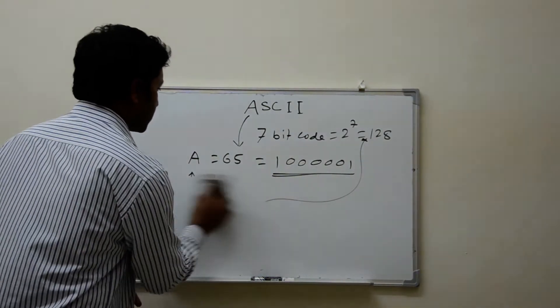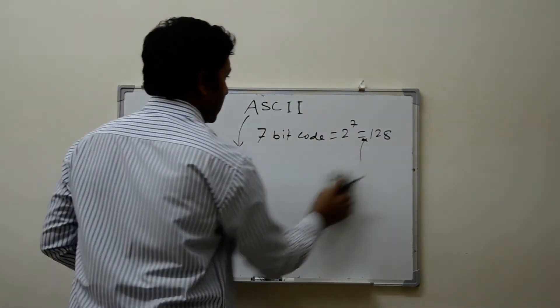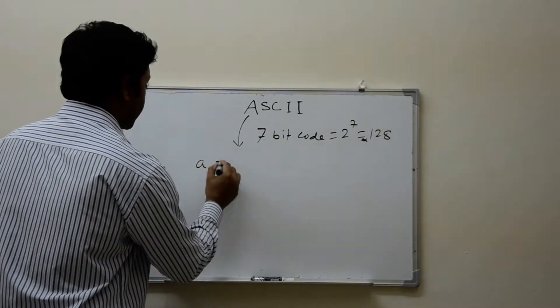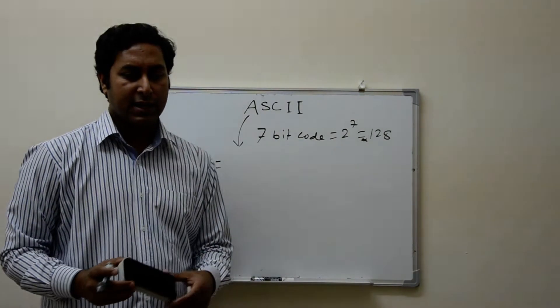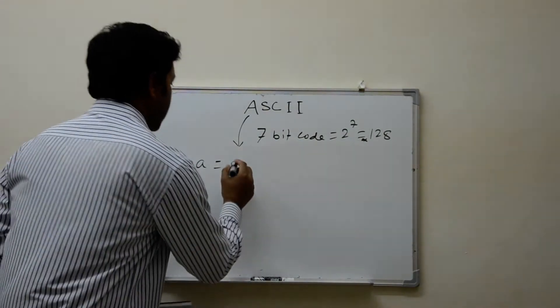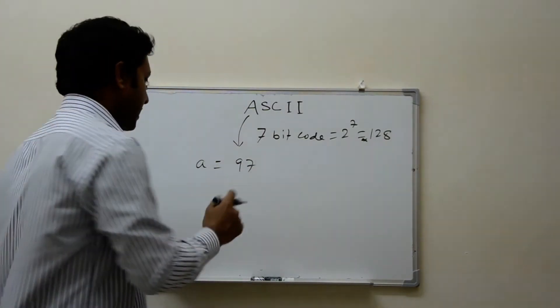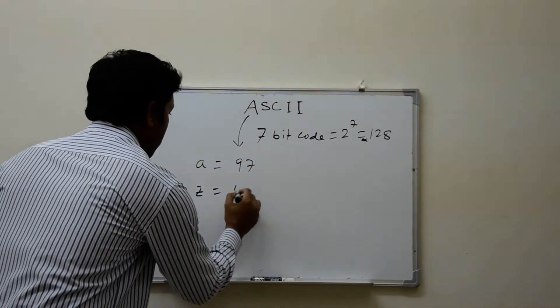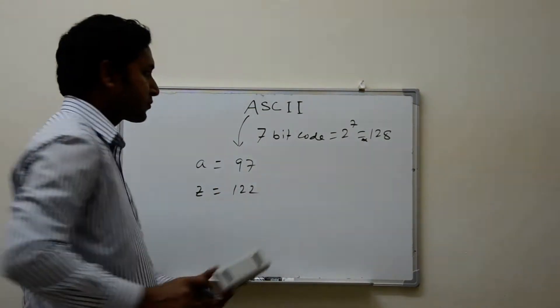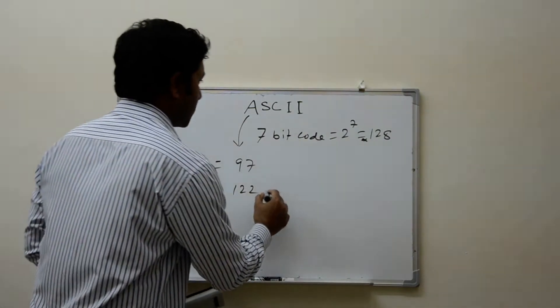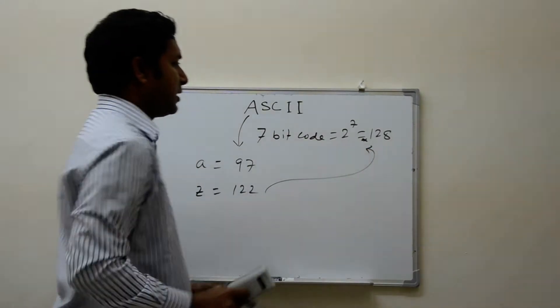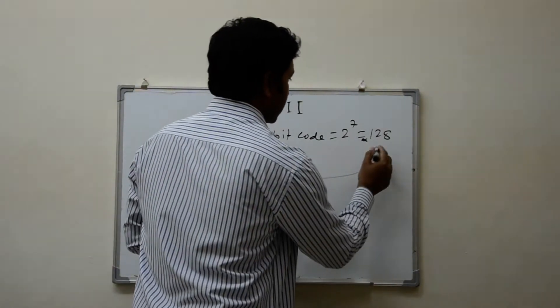Now, if you think about small a, what is the ASCII value of this one? The ASCII value of small a is 97. The ASCII value of small z is 122. So all of them belongs to this 128.